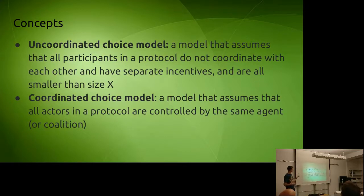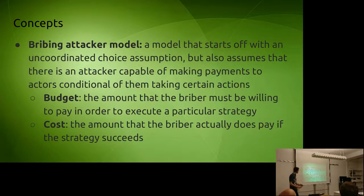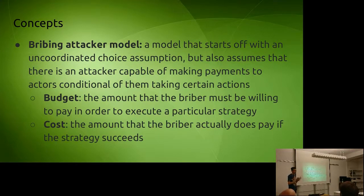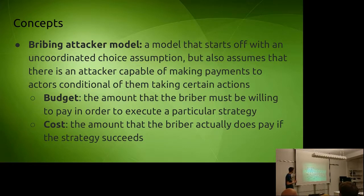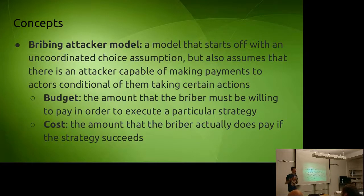The coordinated choice model assumes all actions in a protocol are controlled by the same agent or coalition. The bribing attacker model assumes an uncoordinated choice setting but also includes an attacker capable of making payments to actors conditional on those actors taking certain actions. This model has two parameters: budget — how much the attacker is willing to pay to carry out an attack — and cost — how much the attacker actually ends up paying if the attack succeeds.